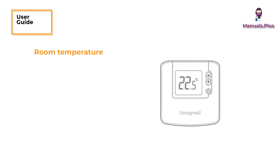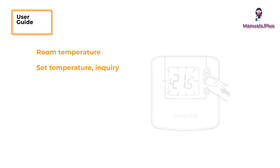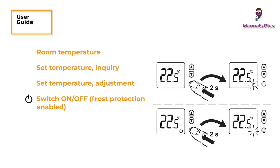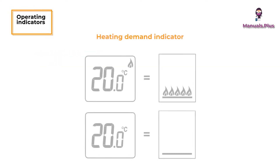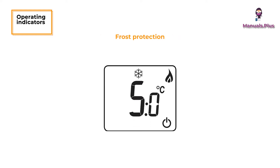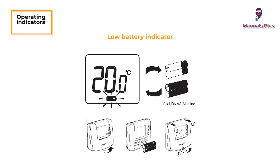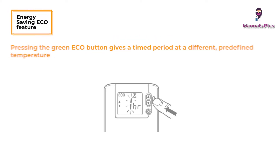User guide topics include: room temperature, set temperature inquiry, set temperature adjustment, switch on or off, frost protection enabled, operating indicators, heating demand indicator, frost protection fault indicator, low battery indicator, heat or cool changeover, and the energy saving eco feature.